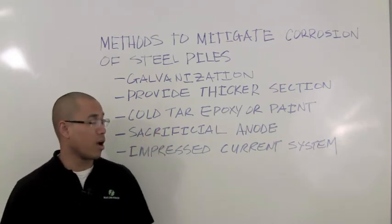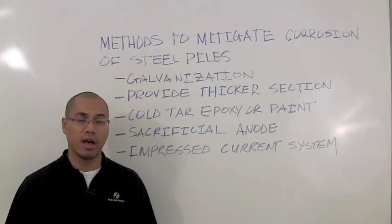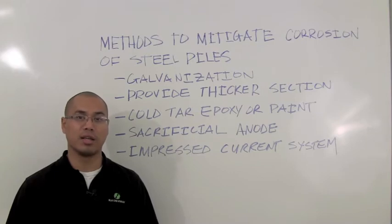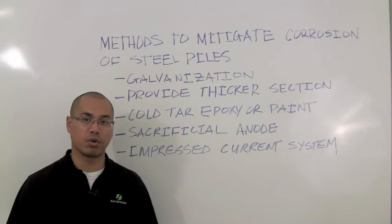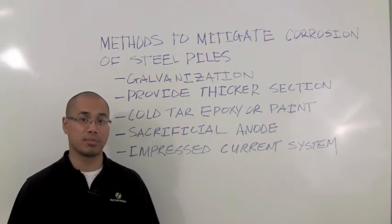The third method is the coal tar epoxy or paint. This method is by far the most cost effective. However, there is a flaw during the driving process. The paint or the epoxy tends to chip off, which leads to pitting corrosion or concentrated corrosion in areas where the epoxy or paint chips off.